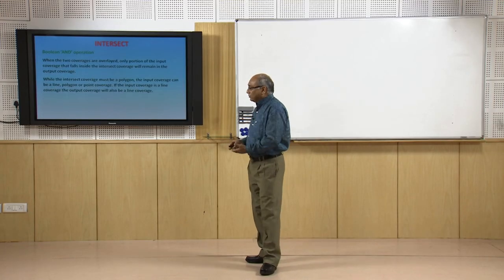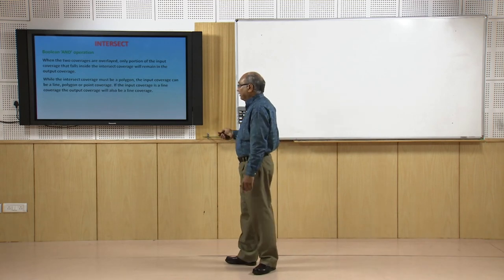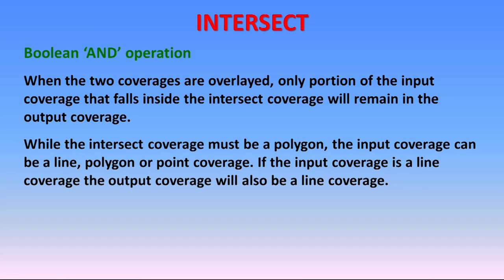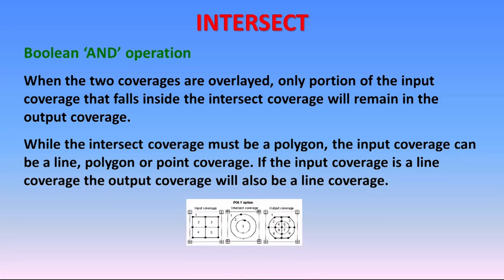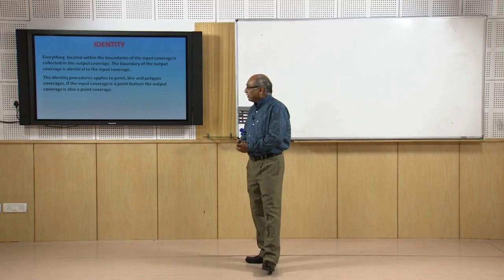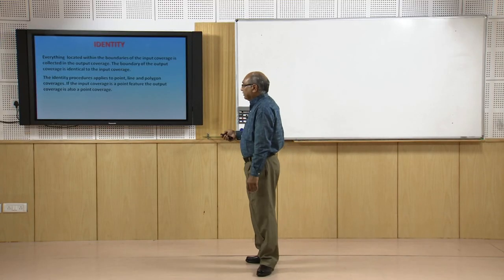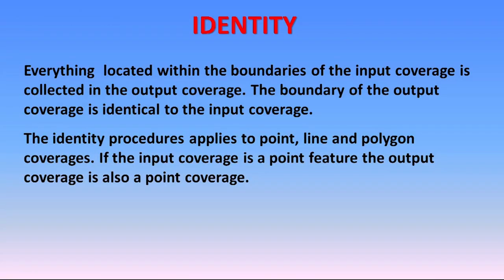Intersect is the AND function in Boolean logic. When two coverages are overlaid, only the portion of the input coverage that falls inside the intersect coverage remains in the output. The identity function collects everything located within the boundaries of the input coverage into the output coverage, with the output boundary identical to the input coverage boundary. Identity procedures apply to point, line, and polygon coverages, and can also be applied to raster data, but not to TIN.